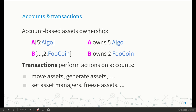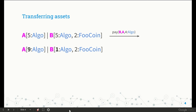Transactions modify the state of the blockchain by performing actions on accounts. For instance, they can move assets from one account to another, they can generate user-defined assets, and they can also perform governance operations like setting asset managers. The first slide illustrates a state transition: we have an initial state where A has five Algos, while B has five Algos and two FooCoin. Then B wants to pay four Algos to A, and after the transition, in the final state, A has nine Algos and B has one Algo.